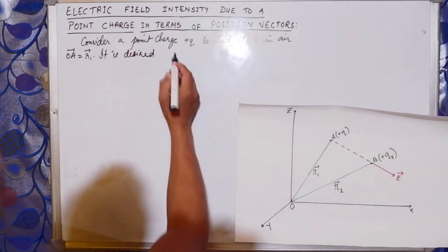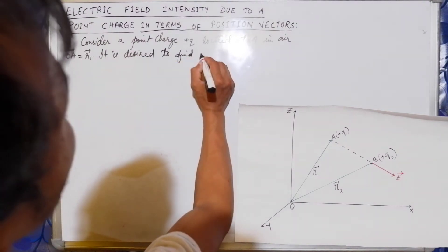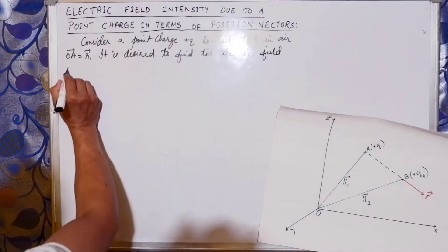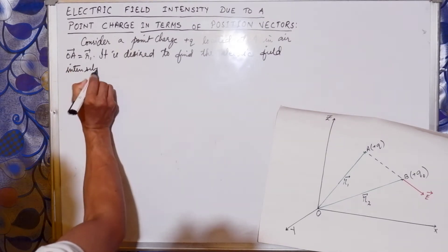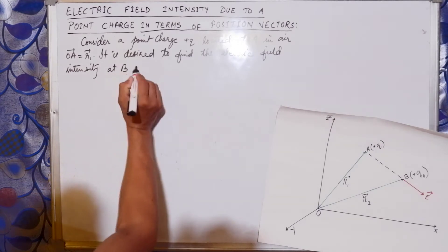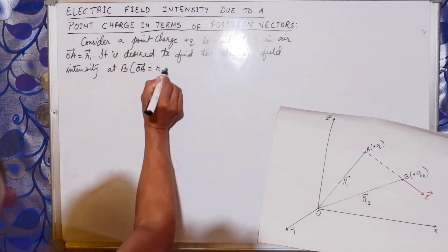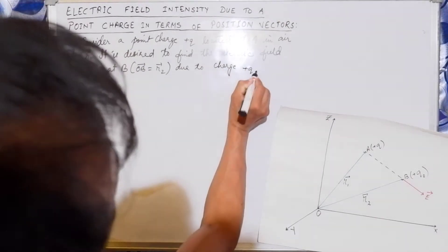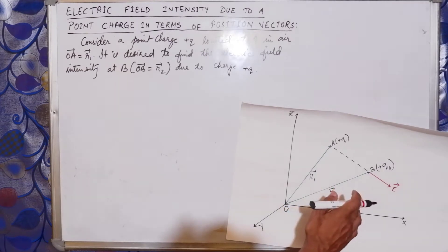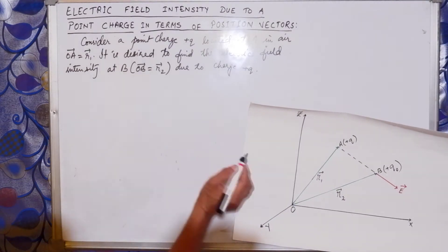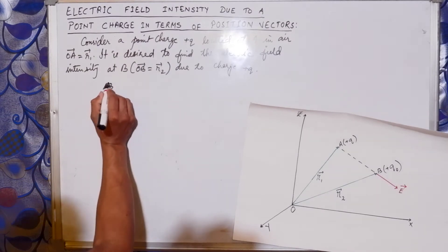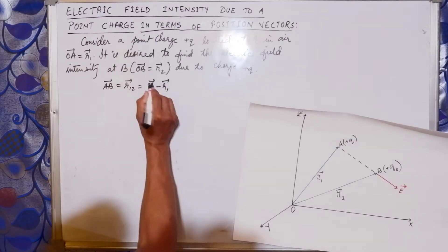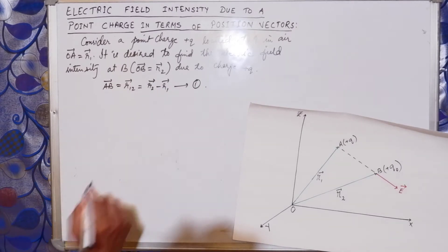It is desired to find the electric field intensity at B. The position vector OB is equal to R2, due to charge plus Q placed at point A. The displacement vector AB will be equal to R12, which is equal to R2 minus R1. Name this as equation number 1.